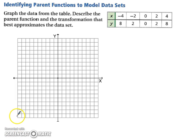Let's look at another example. Let's look at identifying parent functions to model data sets. We're going to graph the data from the table and then describe the parent function and the transformation that best approximates the data set. So let's start by plotting each of these points in the graph. Alright, so now that you have the graph, you can start looking at your comparison.